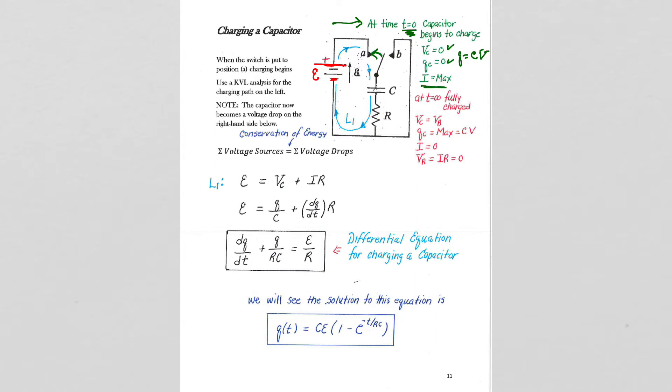So the current is at max. And then at time t equals infinity when we are fully charged, the capacitor voltage has our full back voltage pushing back against the battery. The charge is at its max value based on CV, V is the full battery voltage.